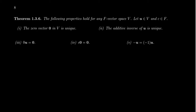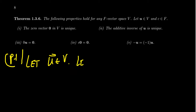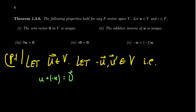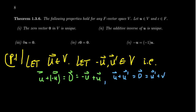The additive inverse of a vector is likewise unique. Let u be a vector inside our space, and let negative u and u prime both be vectors such that u plus negative u equals the zero vector and negative u plus u equals the zero vector. We also want u plus u prime to equal the zero vector, because that is what an inverse means — a vector which when added to the original gives the zero vector, which we now know is unique.